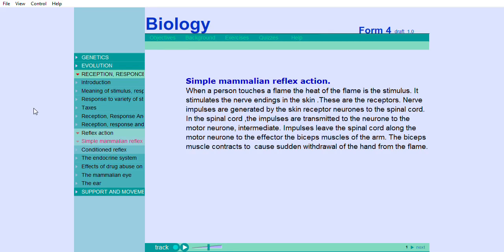In the spinal cord, the impulses are transmitted to the neuron to the motor neuron. Impulses leave the spinal cord along the motor neuron to the effector, the biceps muscles of the arm. The biceps muscle contracts to cause sudden withdrawal of the hand from the flame.